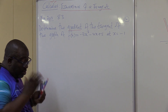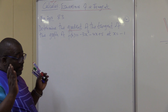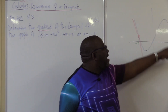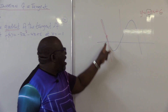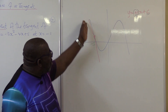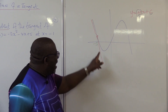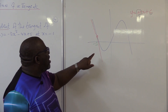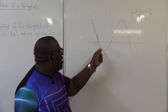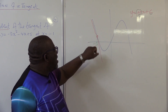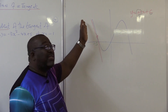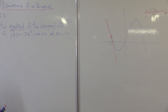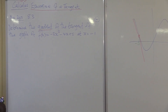We're given nothing about the tangent, but we know that this graph and the tangent are the same where x is equal to minus 1. That becomes important. Remember: the gradient of this line and the gradient of this line are the same at this point. So if I'm looking for the gradient of this line at this point, it will be the same as the gradient of the tangent. That's exactly what we'll be doing here.